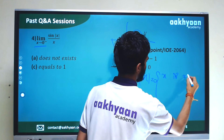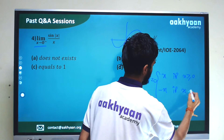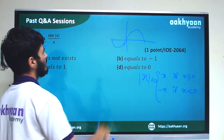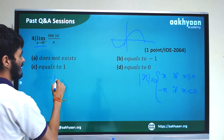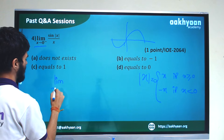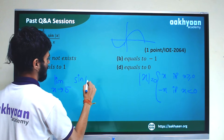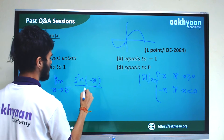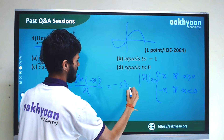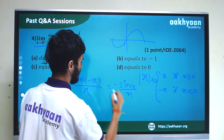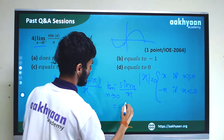For the absolute value function: |x| equals x if x is greater than or equal to 0, and minus x if x is less than 0. So limit x tends to 0 minus of sin(|x|)/x: when x is less than 0, |x| equals minus x, giving sin(minus x) by x.